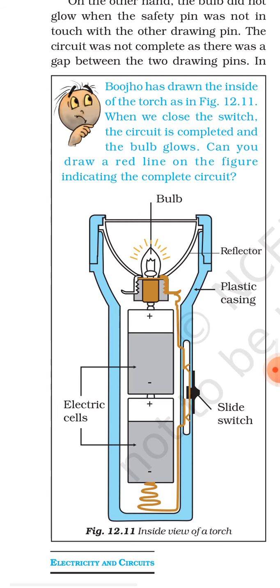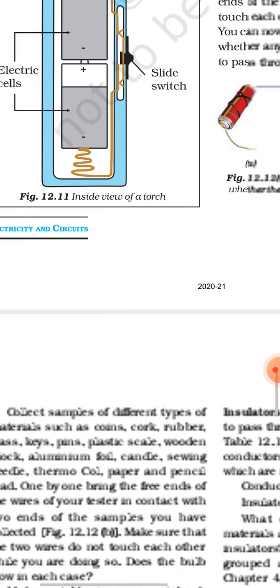Here you can see the inside view of the torch. There is a reflector, bulb, plastic casing, and electric cells — there are two electric cells. Both cells are connected by positive-to-negative terminal. There is also a slide switch inside the torch.